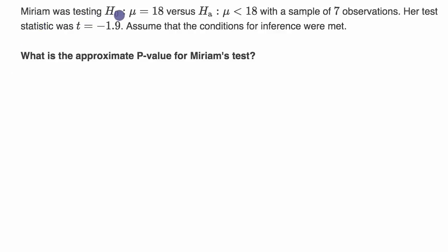Miriam was testing her null hypothesis that the population mean of some data set is equal to 18 versus her alternative hypothesis that the mean is less than 18, with a sample of seven observations. Her test statistic was t equals negative 1.9. Assume that the conditions for inference were met. What is the approximate p-value for Miriam's test?